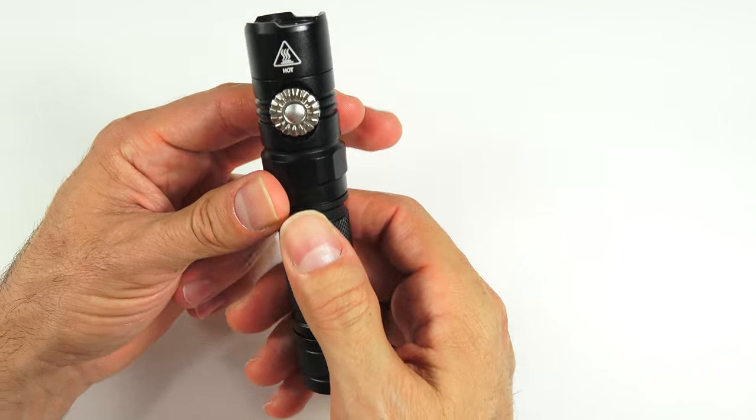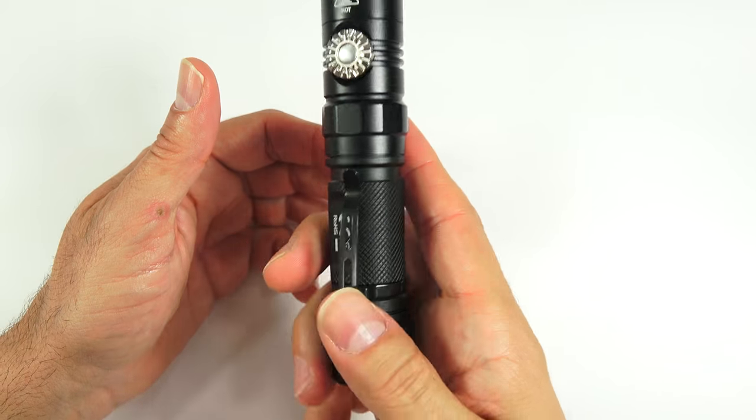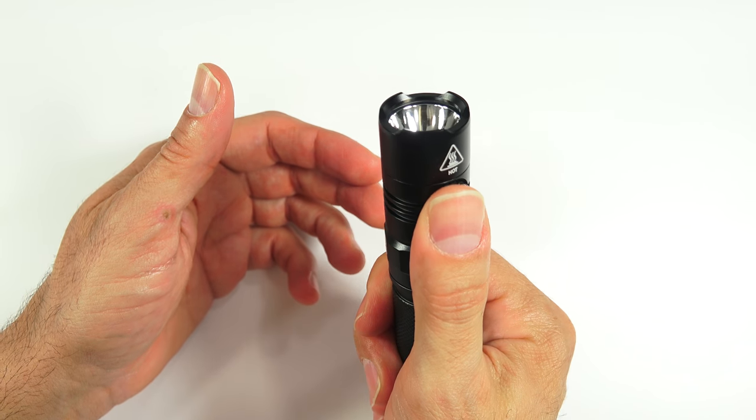For me, I line the pocket clip up with the dial. That way, in the dark, if I find the clip, I know I can just move forward to the dial.